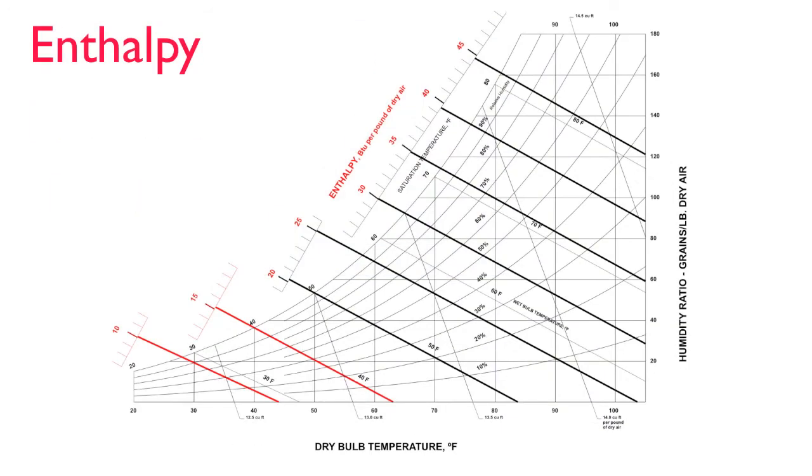Enthalpy, the measure of specific total heat, measured in BTUs per pound of dry air, is indicated by the bracketed numbers on the left.